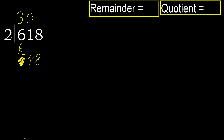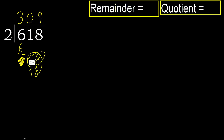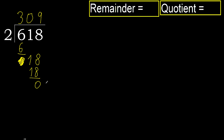18. 2 multiplied by 9 is 18 — 18 is not greater, ok. Subtract: 18 minus 18 is 0. Next, there is no number, therefore finish.